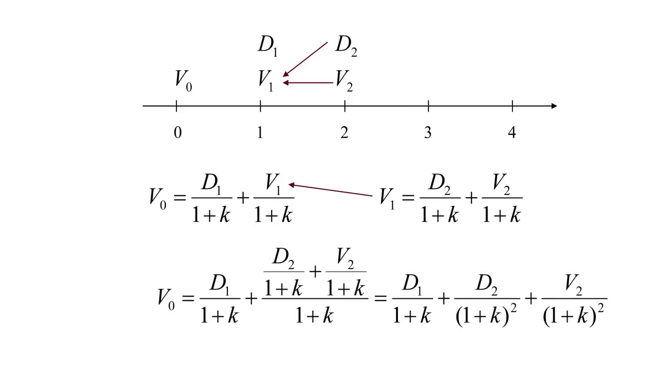Once we've made that substitution, you can see that the algebra works out so that the present value today, V0, is equal to the present value of the dividend to be received at time one, plus the present value of the dividend to be received at time two, plus the present value of what will eventually be the selling price at time two.